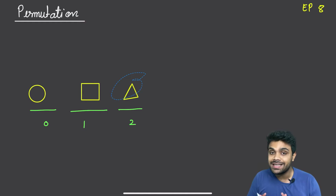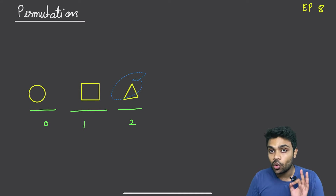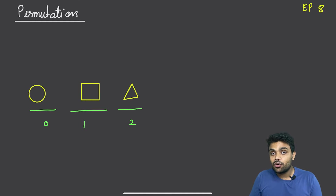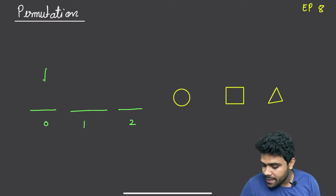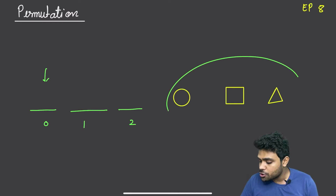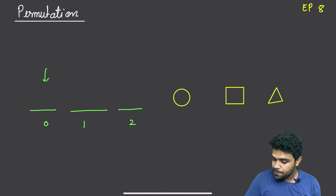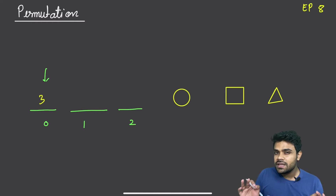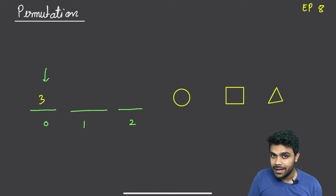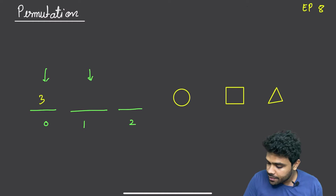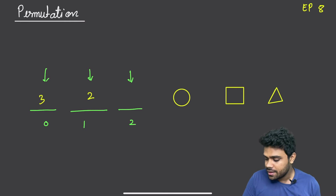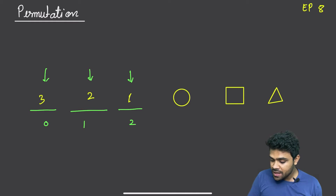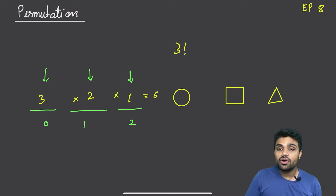How many permutations can I have for these three different elements? The answer is 3 factorial. I have three elements and three places. For the 0th place I have three options. After placing one, two elements remain and I have two options for position one. For position two, only one element is left — so 3 × 2 × 1 = 6, which is 3 factorial permutations.